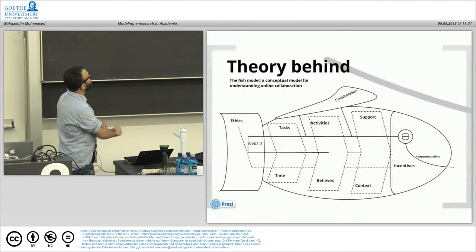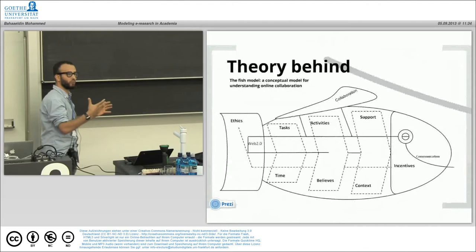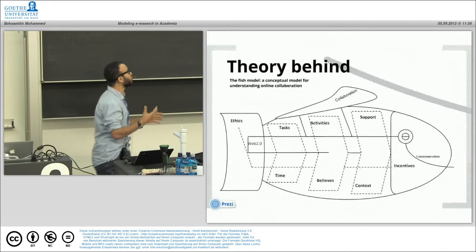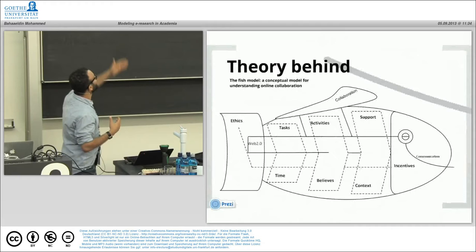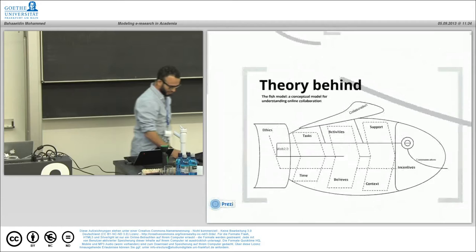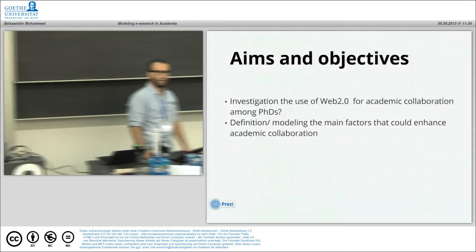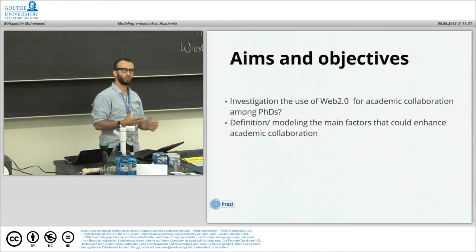I would like to present the idea behind my research. We analyzed literature review to understand what factors enhance online collaboration for PhD students, to get them connected together. We reached a relationship between factors like tasks, time, activities, beliefs, support, content, incentives, ethics, trust, and communication. The aim of the study is investigating use of web 2.0 for PhD students in terms of collaboration and defining the factors behind collaboration.